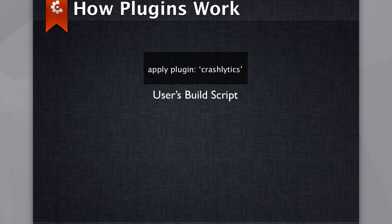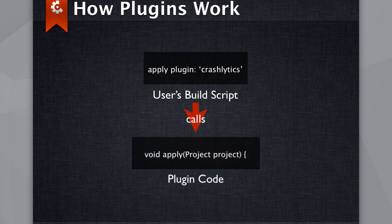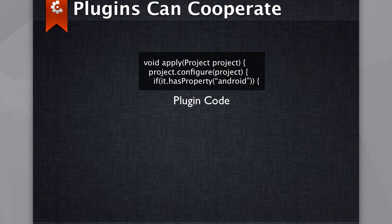When you do apply plugin, it calls Groovy code and passes in a project object that you can interact with. This project object has different properties that exist within your build.gradle. For example, you can check if your build is an Android build and then extract some Android properties out of it.